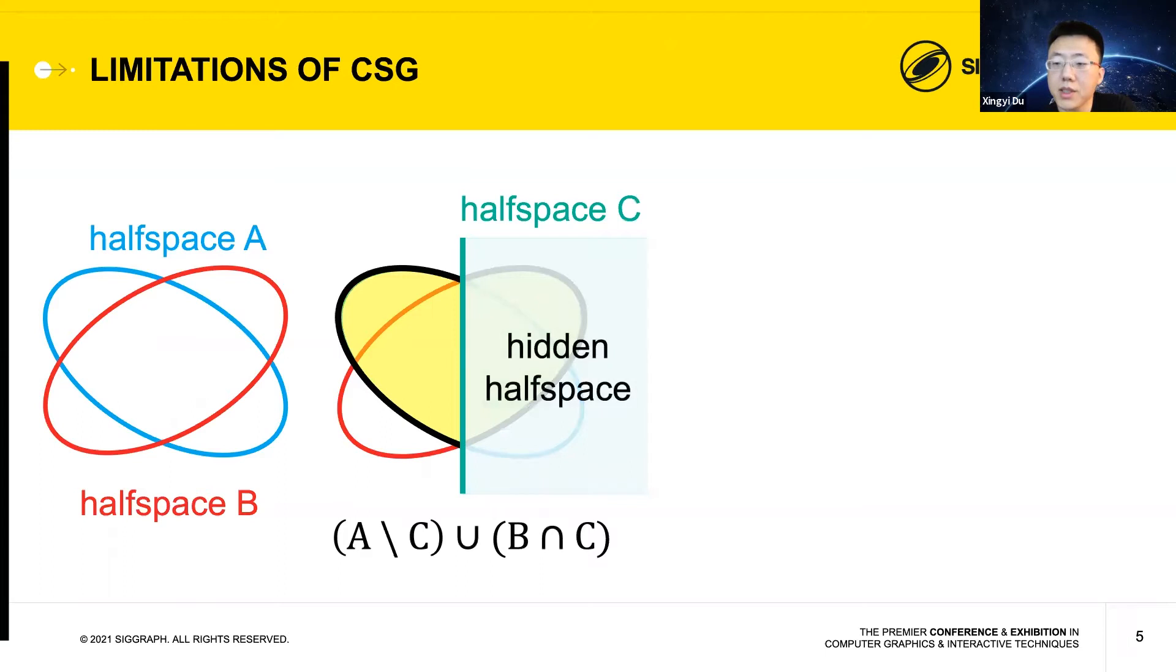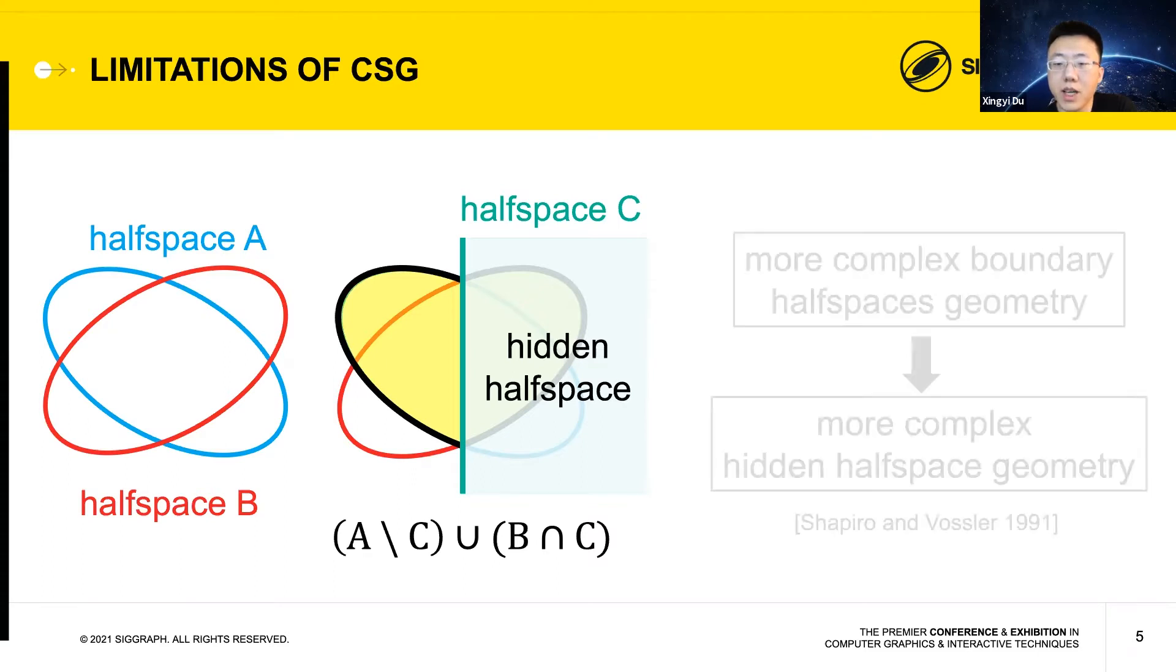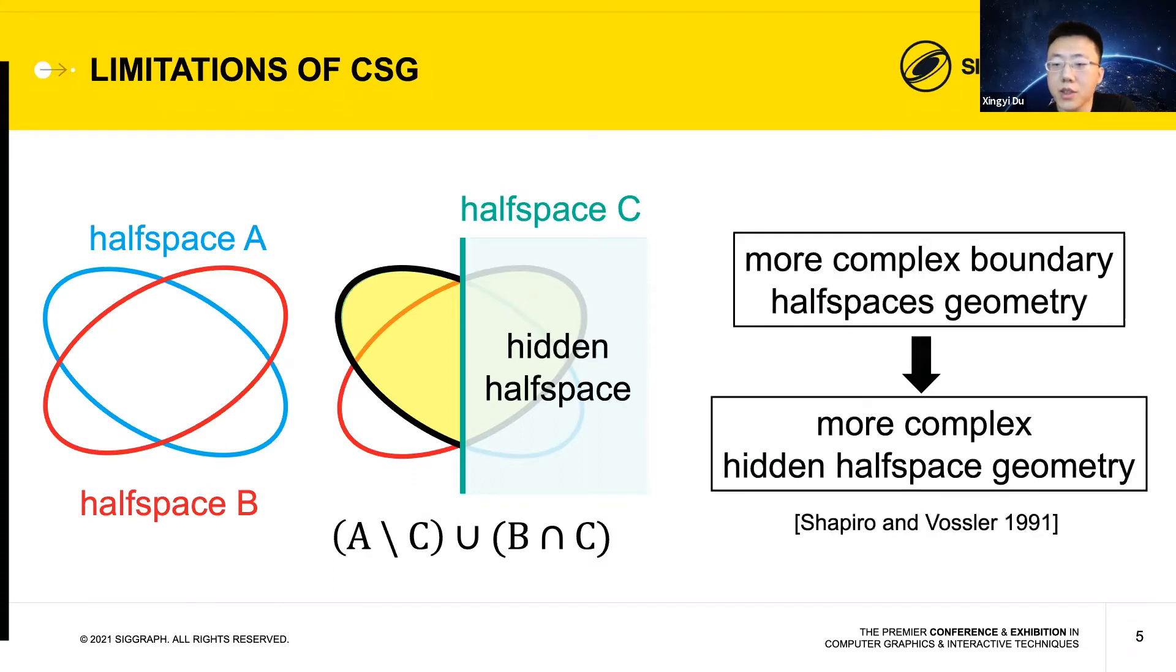Identifying hidden half spaces not only adds burden to users during interactive design, but also remains a key challenge in reverse engineering CSG from other representations, such as meshes. In fact, Shapro and Wosler showed back in the 90s that the geometric complexity of hidden half spaces increases with the geometric complexity of the half spaces that bound the shape. To date, it remains an unsolved problem of constructing hidden half spaces for shapes bounded by algebraic surfaces with degrees higher than two.